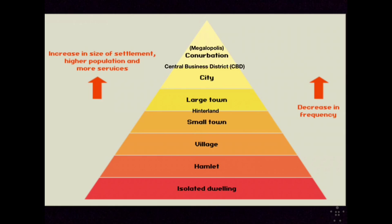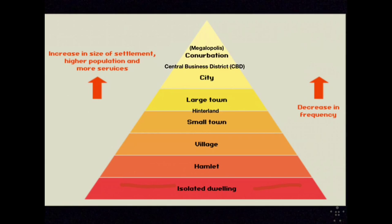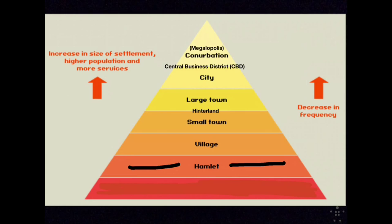Number two: urban hierarchy. Clustered settlements range in size from hamlets to megalopolises, and they may be arranged in a hierarchy according to the complexity of their centralizing functions. On this model, at the bottom there is an isolated dwelling zone, which we're not really focused on in our curriculum. Above that is the hamlet — small clusters of farmers' houses with few basic services: you might have a gas station, a general store, or a post office.